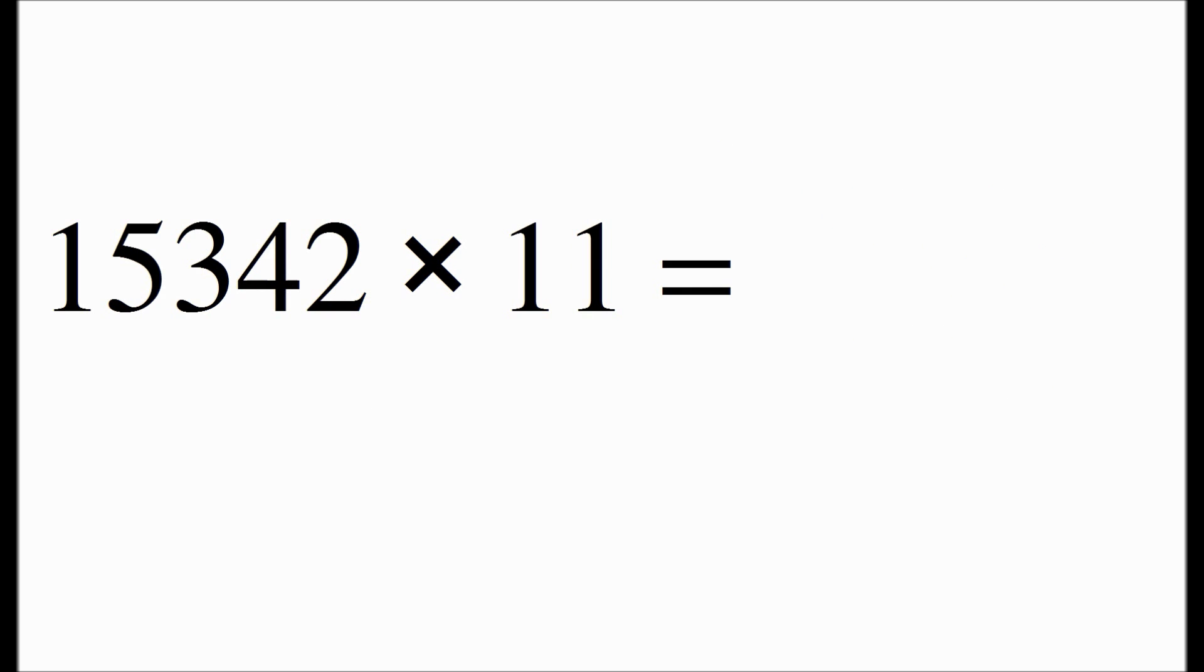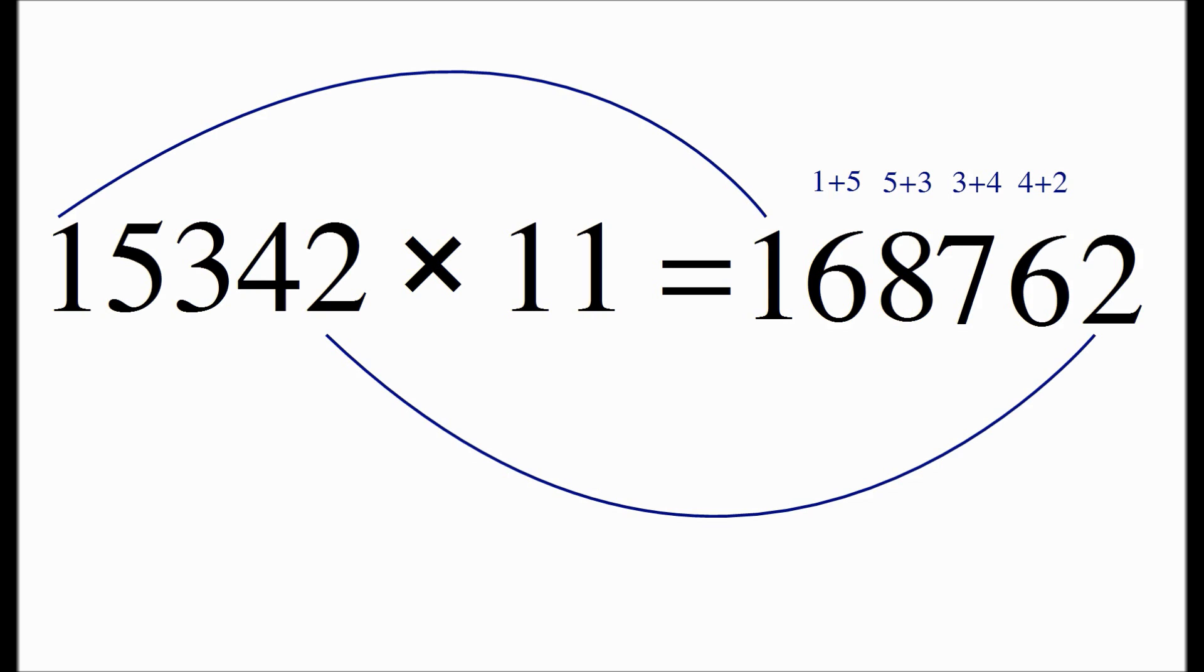We can do this for any size number we want. We first copy over the first digit of the number. Then we add up the digits that are in between. So we take 1 plus 5 to get 6. 5 plus 3 to get 8. 3 plus 4 is 7. 4 plus 2 is 6. And finally we copy over the last digit.